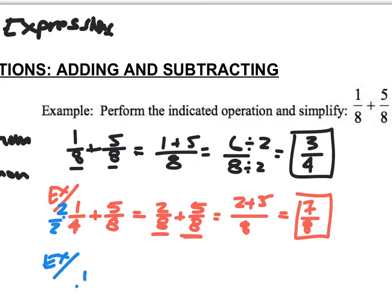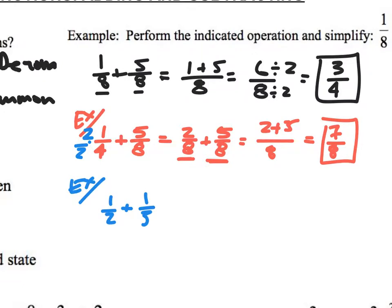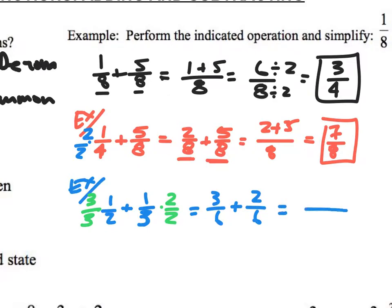Let's look at one half plus one third. Between two and three, the common denominator is six. I multiply the one half by three over three, and the one third by two over two. That gives me three sixths plus two sixths. Combining those together, I add the numerators: three plus two over six, which gives an answer of five sixths.